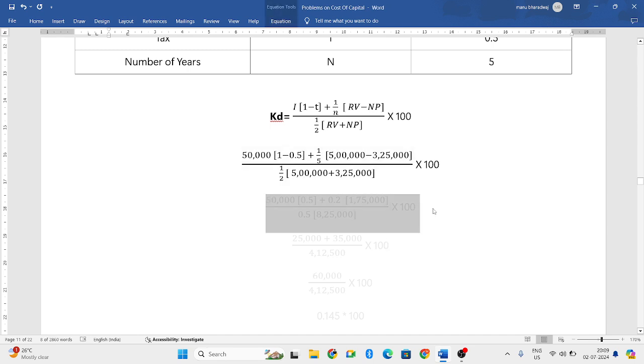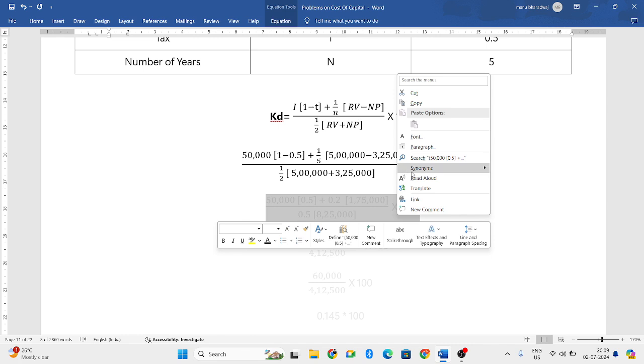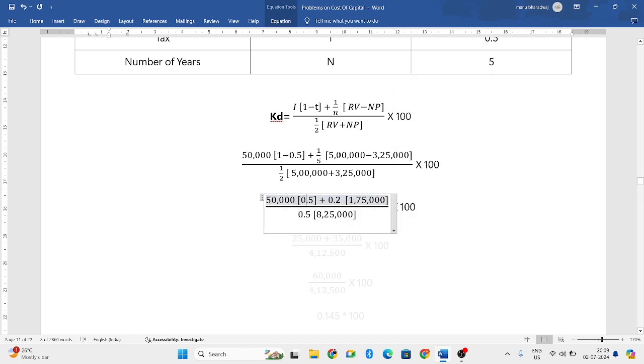Now, try to simplify the formula. So, 1 minus 0.5 will be 0.5. And 1 divided by 5 will be 0.2. 5,00,000 minus 3,25,000 will be 1,75,000. Half is nothing but 0.5. And 5,00,000 plus 3,25,000 will be 8,25,000.